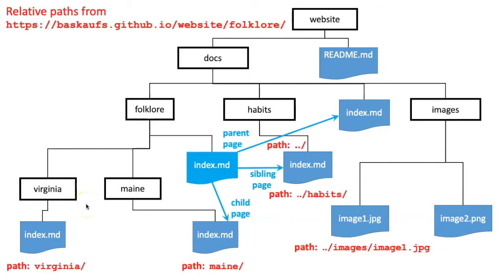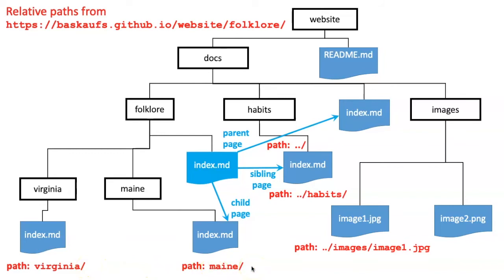If I want to make links to the various pages, it's generally not a good idea to put in the entire URL, but rather to put in relative paths. Let's imagine that I'm working on the page about folklore. If I want to specify the path to the parent page, which would be the home page, then I use this relative path dot dot slash. If I want to access a sibling page, I have to go up one level and then go down to that page, so I would say dot dot and then slash habits. If I want to go to a child page, I simply list the name of the child page and a slash.